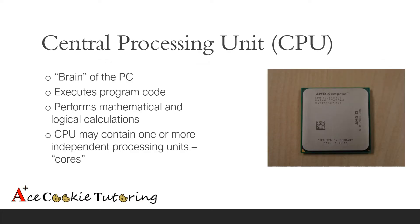The central processing unit, also called the CPU, is the brain of the PC. It executes all of your program code — your software, your operating system, your games — and it does this by performing mathematical and logical calculations. The CPU may contain one or more independent processing units called cores.